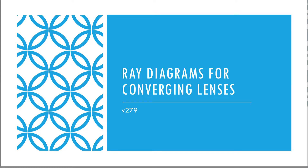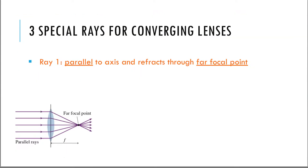Hey everyone. In this video we're going to look at ray diagrams for converging lenses. If you remember, we did ray diagrams for mirrors. Ray diagrams help us find our images by drawing rays and seeing where they intersect. There are special rays that we can draw that make it easier to find those images.